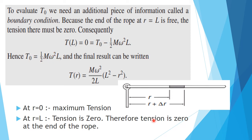Our final result is the variation of tension with r: T(r) equals m·omega squared by 2l times (l squared minus r squared). This is the variation of tension along the rope's length. From this equation, two extreme cases arise. When r equals 0, at the nearest point to the pivot, we get maximum tension. When r equals l, the tension is 0 — the tension is zero at the free end of the rope. This is our conclusion and final result.